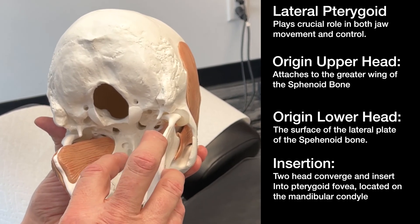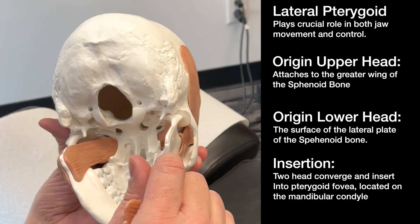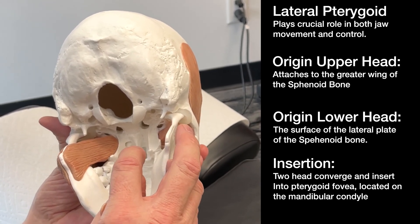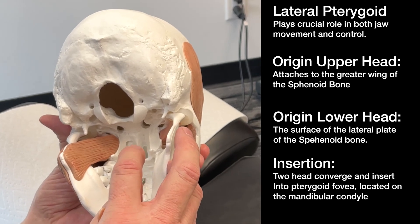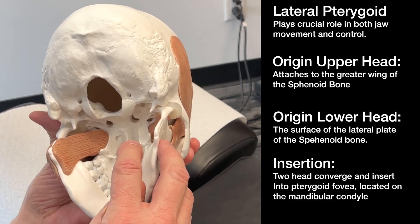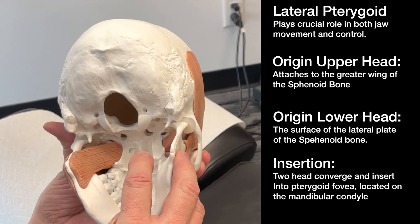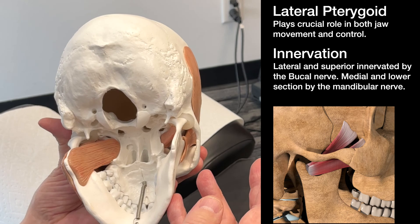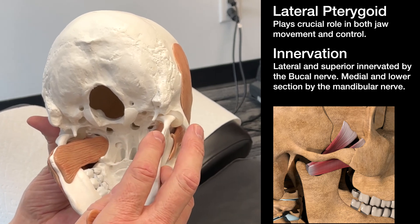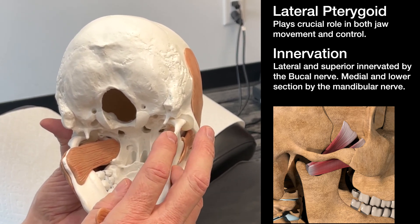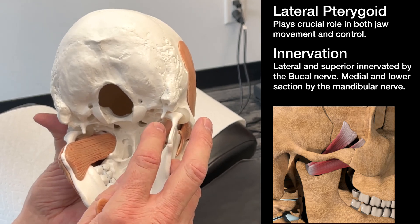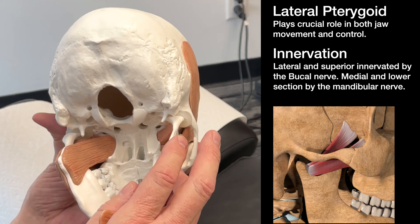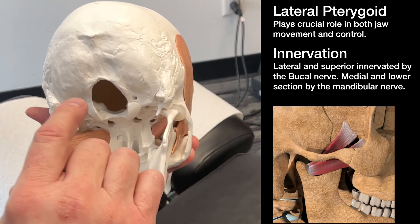When it comes to the insertion, the two heads converge and come together to insert into the pterygoid fovea on the front of the neck of the mandible, or the mandibular condyle. The innervation is the superior and lateral part of the inferior divisions, innervated by a branch of the buccal nerve. The medial part of the lower head is innervated by a branch from the anterior trunk of the mandibular nerve.